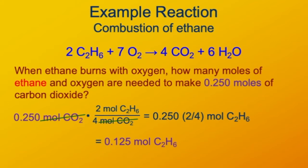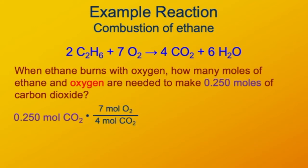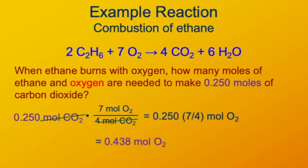Now we'll do the same analysis for oxygen. Starting again with 0.25 moles of carbon dioxide, there is a 7 to 4 ratio of oxygen to carbon dioxide. When we're done with those calculations, we see that 0.438 moles of oxygen is required to make 0.25 moles of carbon dioxide.